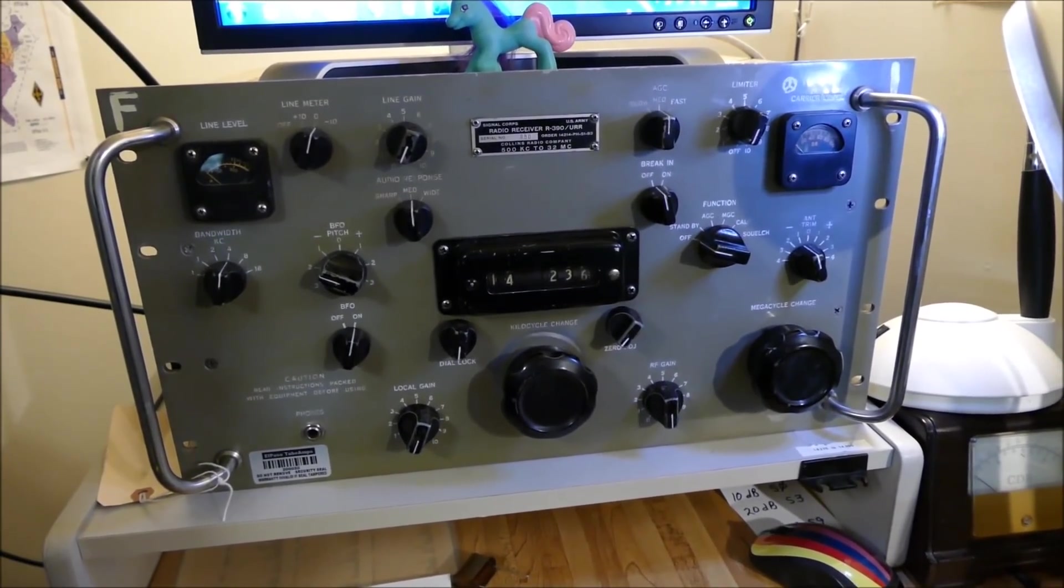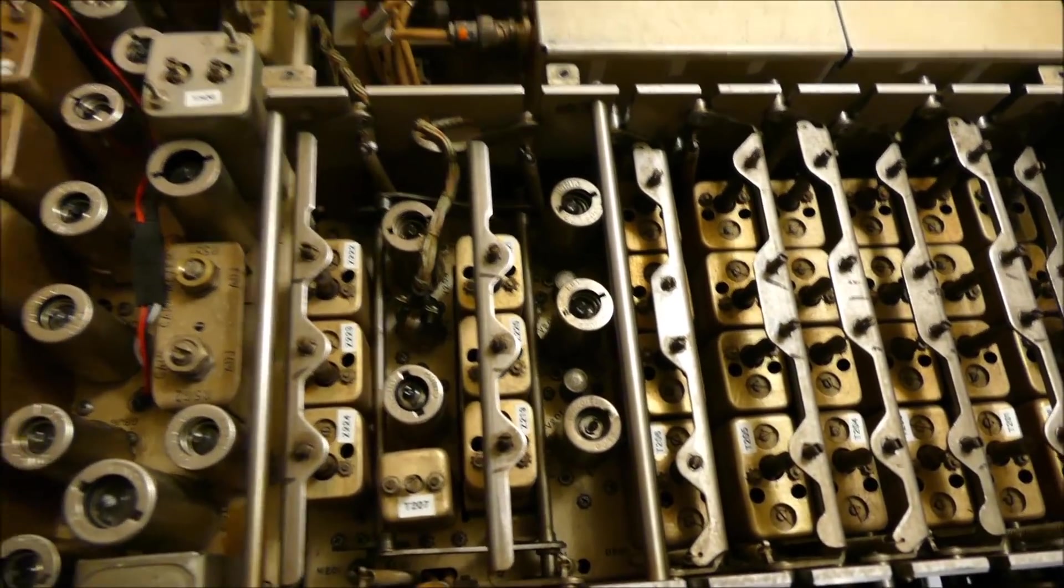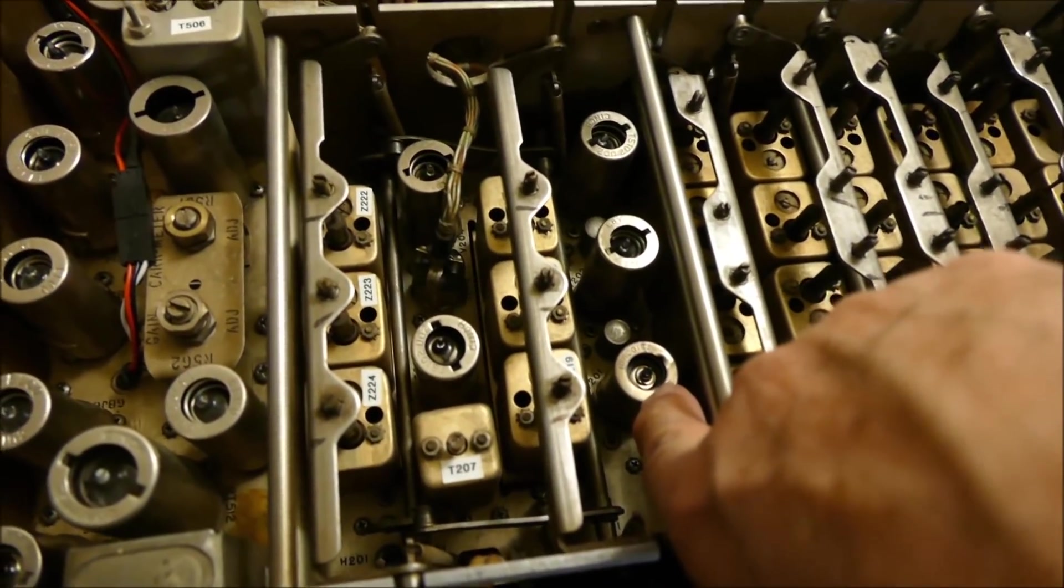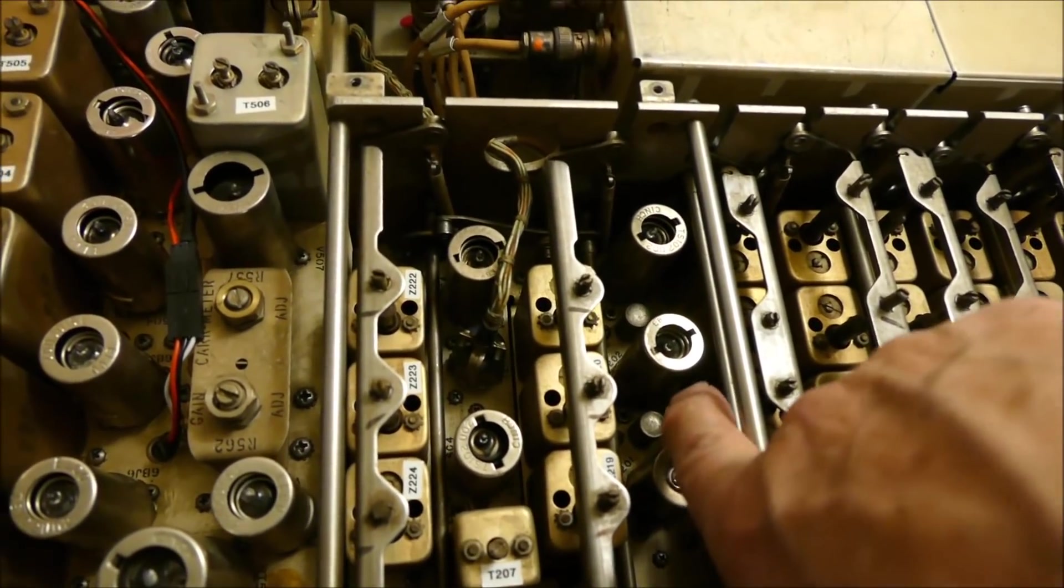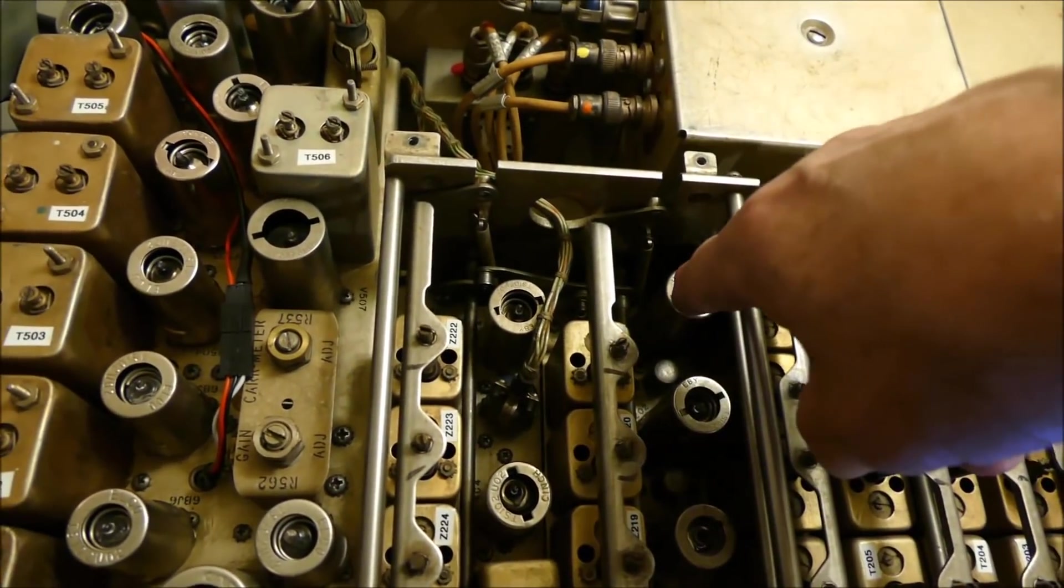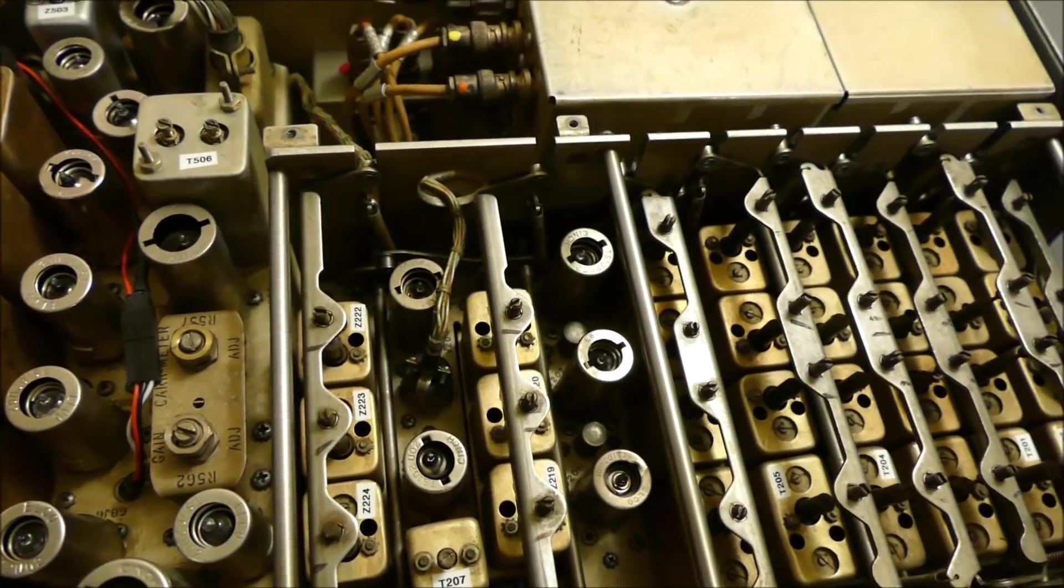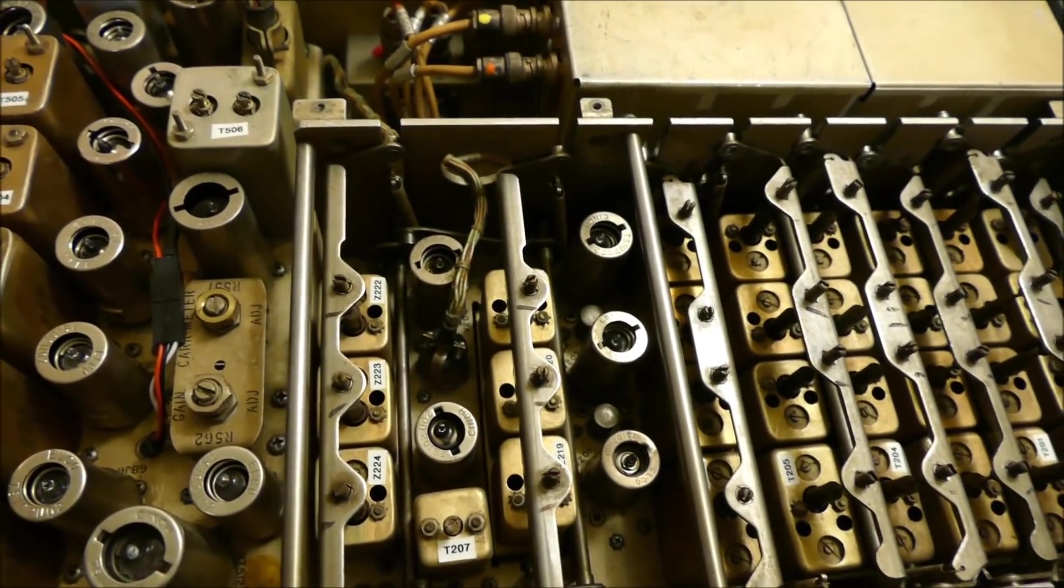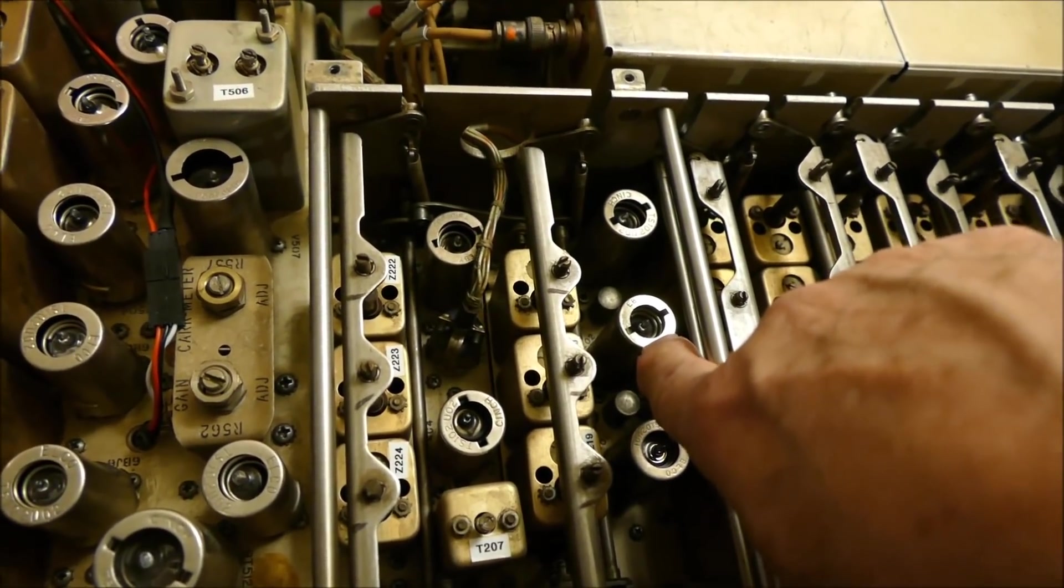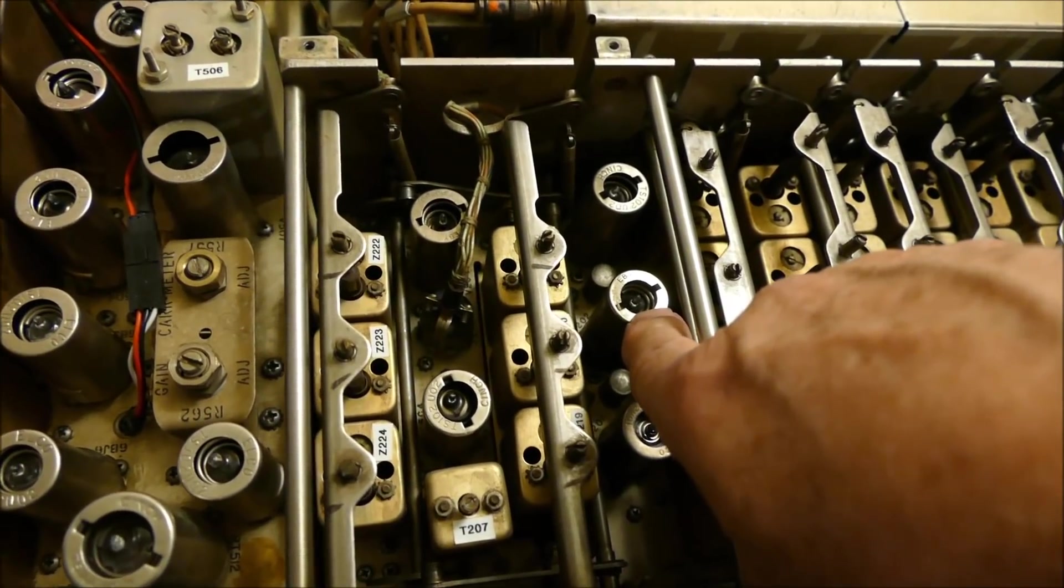Here's the inside of this beauty. Here's the first RF amplifier, a 6AJ5. The second RF amplifier is a 6BJ6. Then these three tubes - 6C4, 6C4, and 6C4 - are mixers. They're all in tip-top shape. I've got a bunch of these tubes.